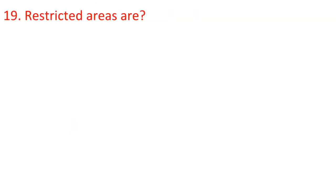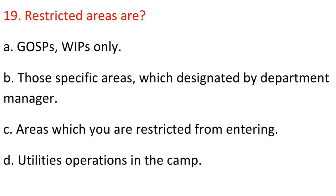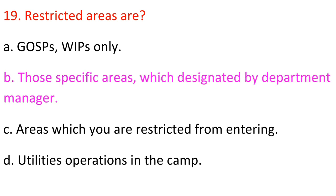Question 19: Restricted areas are — A) GOSPs and WHIPs only, B) Those specific areas designated by the department manager, C) Areas which you are restricted from entering, D) Utilities operations in the camp. Answer: B) Those specific areas designated by the department manager.